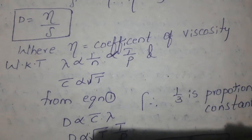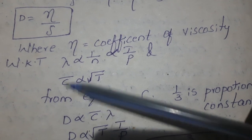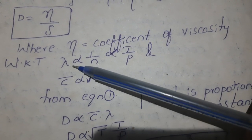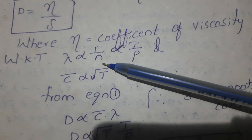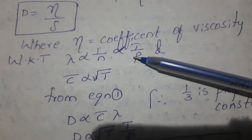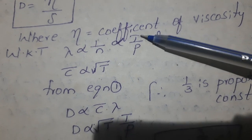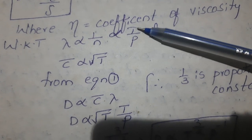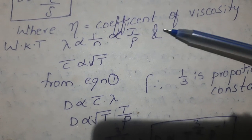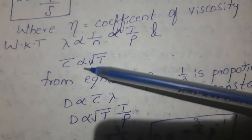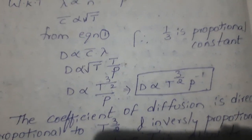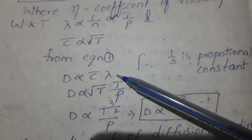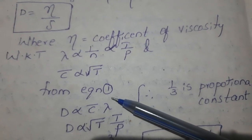We know that lambda is directly proportional to 1 by n, and directly proportional to T by P. And c-bar is directly proportional to root T.